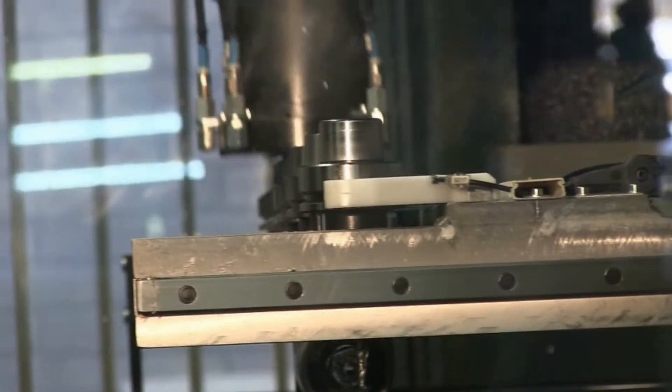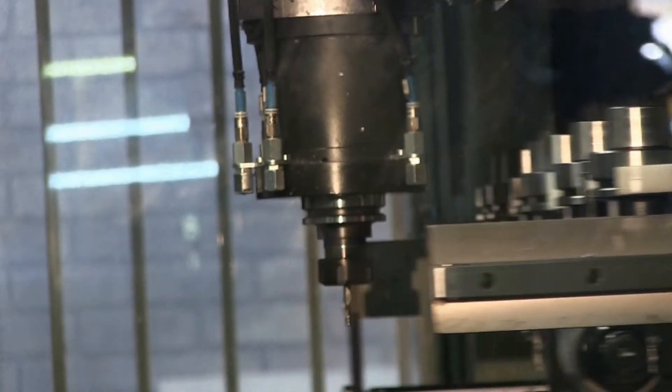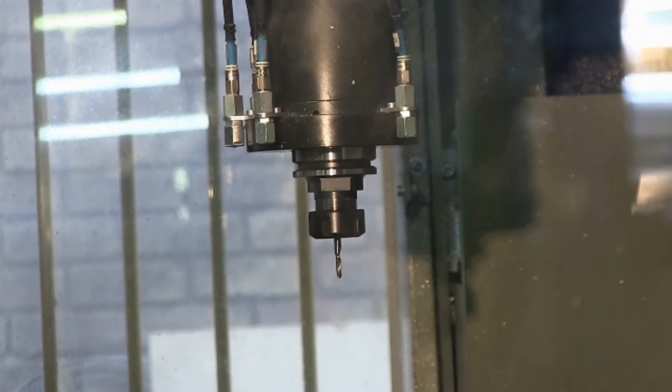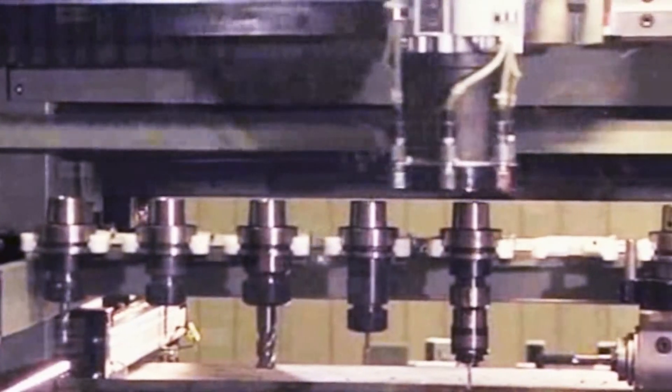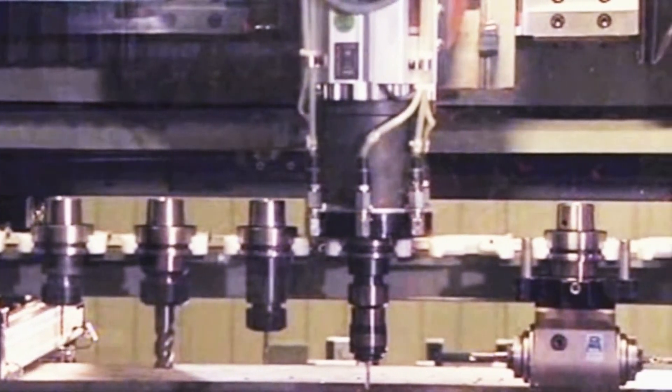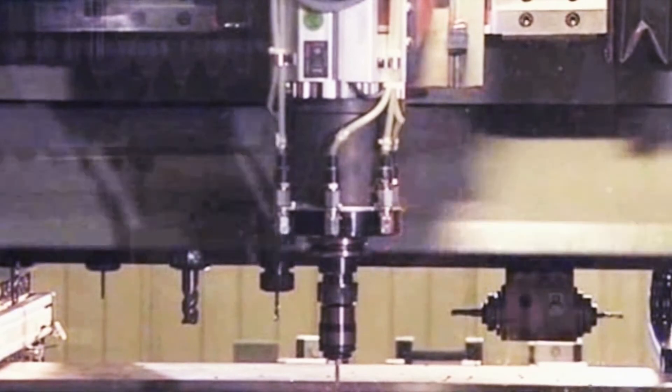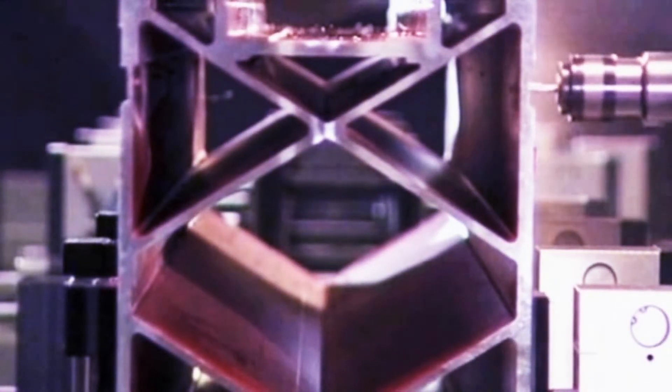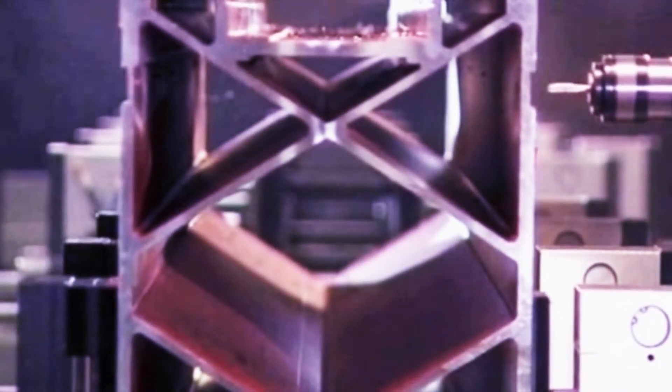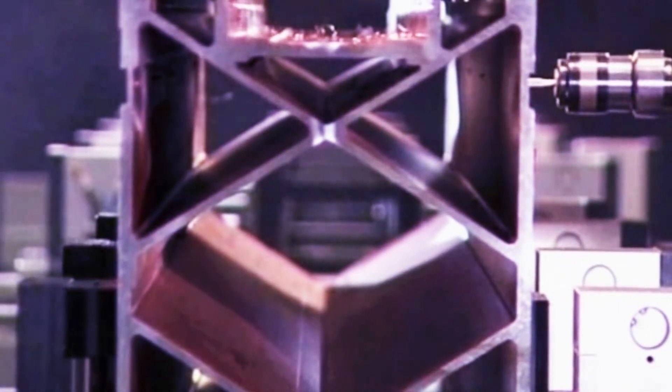The high speed retractable tool magazine is installed directly on the mobile gantry and thanks to its dedicated housing ensures maximum protection of the tool holder tapers against swarf and accidental knocks. It can contain up to nine tools and each tool holder is provided with a sensor which detects the correct positioning of the tool holder taper.